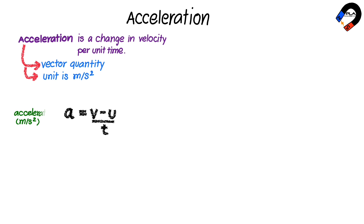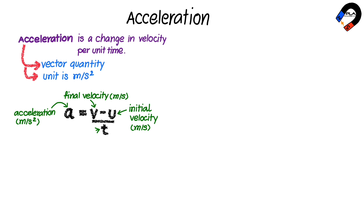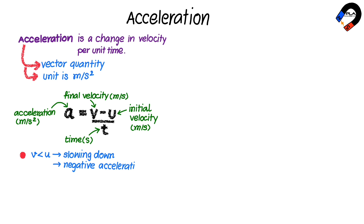A is acceleration, its unit is meters per second squared. V is final velocity, its unit is meters per second. U is initial velocity, its unit is meters per second. And t is time taken, its unit is second. When final velocity v is less than initial velocity u, the object is slowing down and acceleration is negative. This is called deceleration.